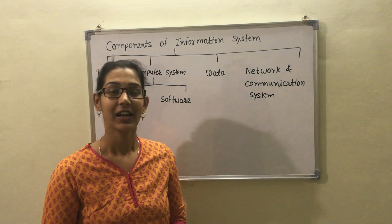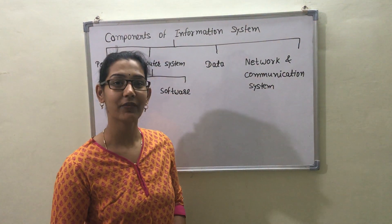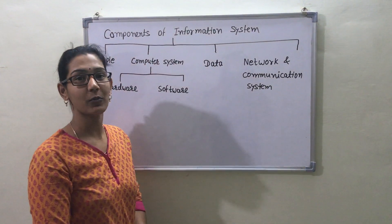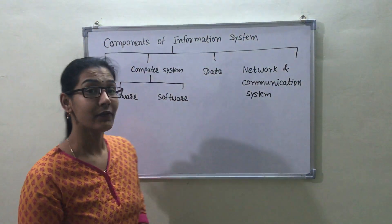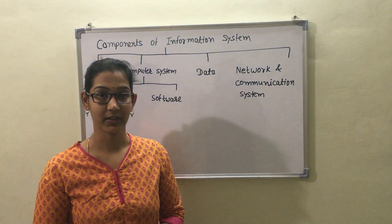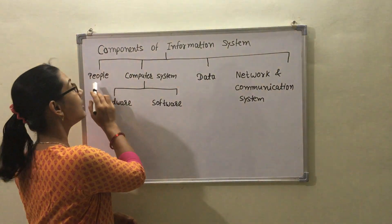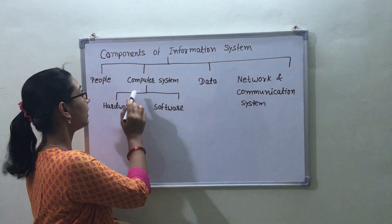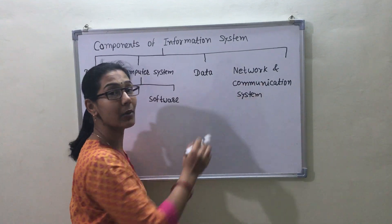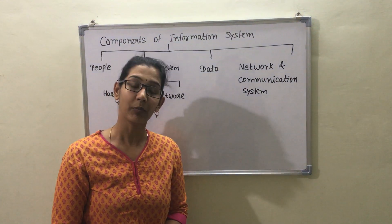Welcome to the channel Knowledge 24. Today we will discuss the components of an information system. A computer-based information system is comprised of people, hardware, software, data, network, and communication systems that support communication.